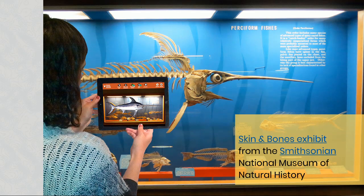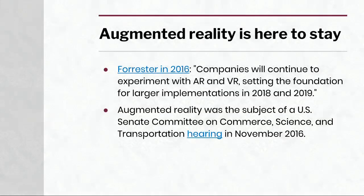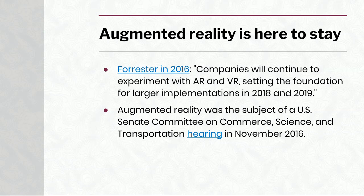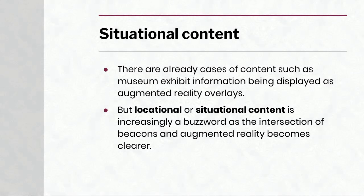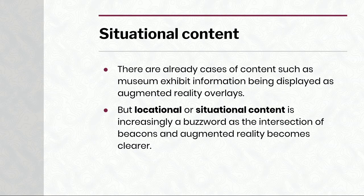What is happening in the augmented reality world? Nowadays in AR we're seeing a lot of growth in museology. Augmented reality is a real revolution for museums — for example, the Smithsonian Skin and Bones exhibit allows you to hold up your device and see differences in content and media as part of that museum visit. Augmented reality is also here to stay. In 2016, Forrester said companies will continue to experiment with AR and VR, setting the stage for formal implementations in 2018 and 2019. There was even a Senate hearing on augmented reality and what it means for the future of commerce.